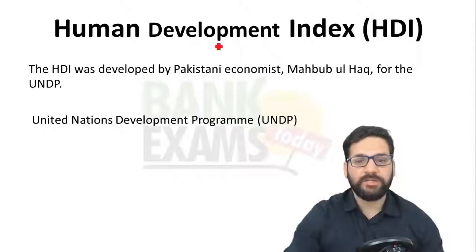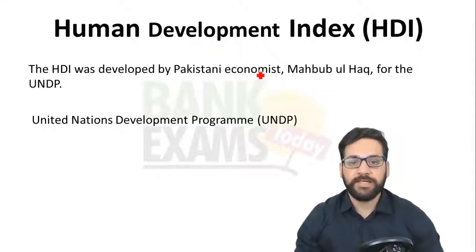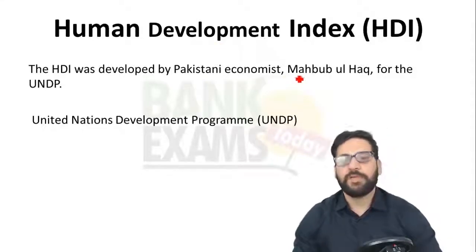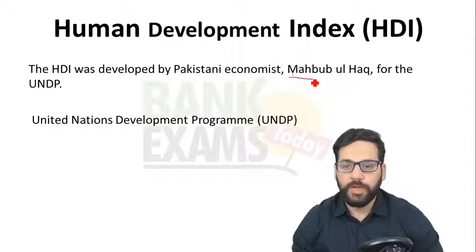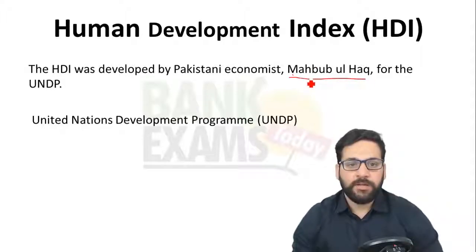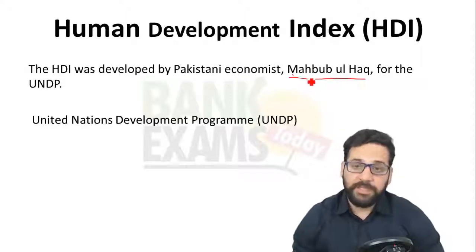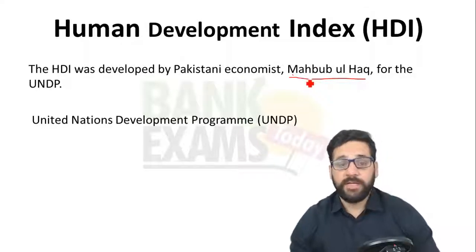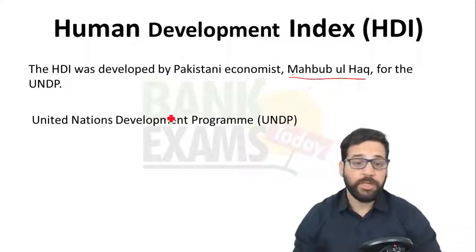The Human Development Index, HDI, is a statistic composite index of life expectancy, education, and per capita income indicators, which are used to rank countries into four tiers of human development.